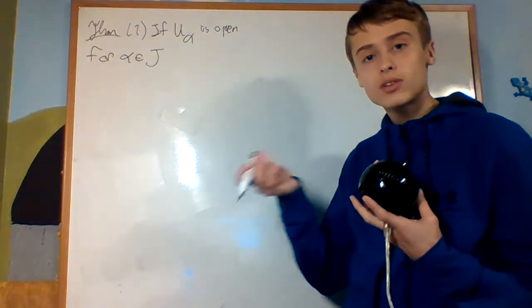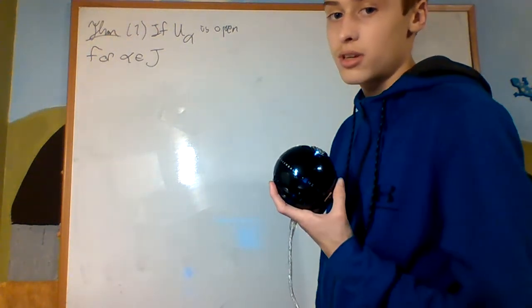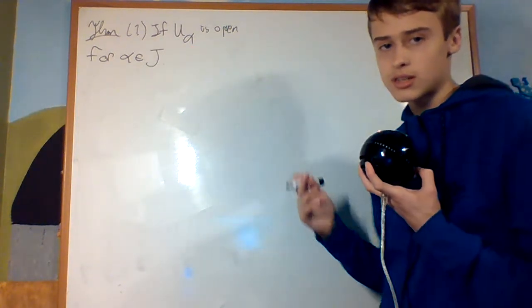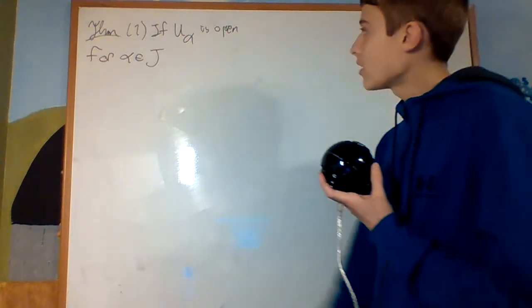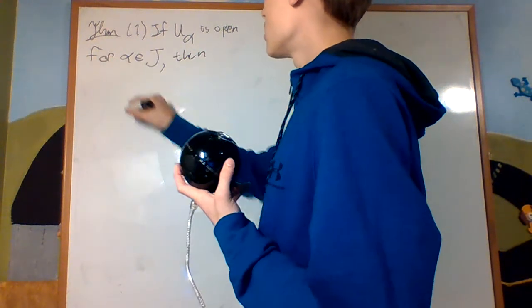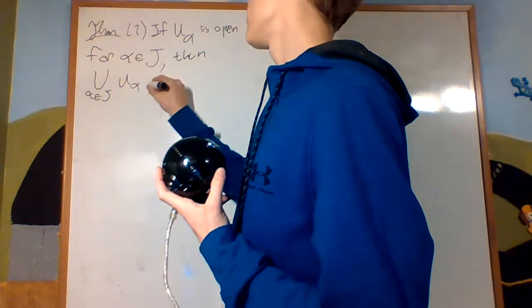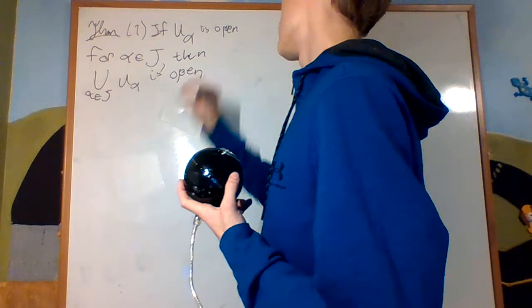It could be the natural numbers 1, 2, 3, 4, 5, and so on, or it could be the real numbers. That's a completely different size of an infinity if you've taken a real analysis course. So if these are open for all alpha in J, then the union for alpha in J of U_alpha is open.